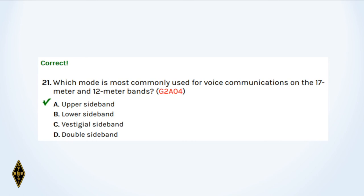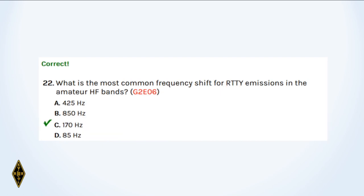And 21: Which mode is most commonly used for voice on the 17-meter and 12-meter bands? They're above 9 megahertz, so upper sideband. And 22: What is the most common frequency shift for radio teletype emissions? 170 hertz — that's between the mark and the space tones, 170 hertz difference.